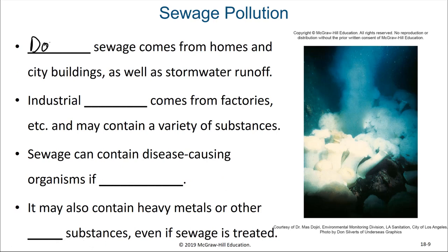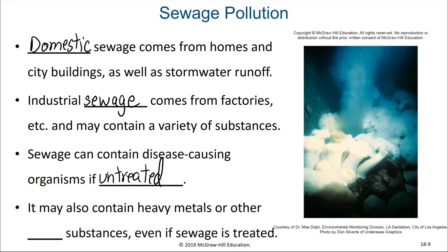Domestic sewage comes from homes and city buildings as well as storm water runoff, and often this will be treated in a wastewater plant, though that varies based on community and economic status. Industrial sewage comes from factories and other manufacturing facilities and may contain a variety of substances. Sewage can also contain disease-causing organisms if it is untreated. It may also contain heavy metals and other toxic substances even if the sewage is treated. One example of a biological molecule that builds up even in treated sewage is pseudohormones, which can have drastic impacts on natural communities and are not removed by current water treatment methods.